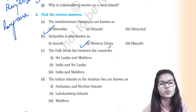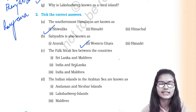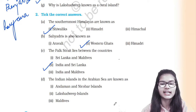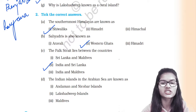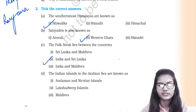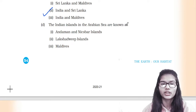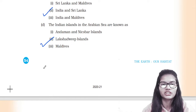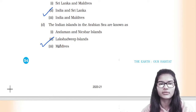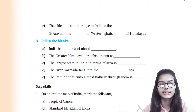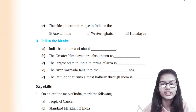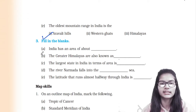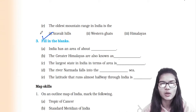The Palk Strait lies between India and Sri Lanka. The Indian islands in the Arabian Sea are known as Lakshadweep Islands. For the Indian Ocean, we have the Andaman and Nicobar Islands. The oldest mountain range in India is the Aravali Hills.